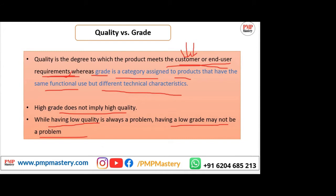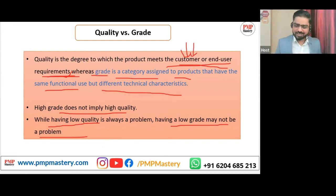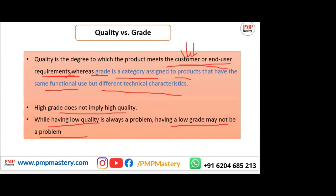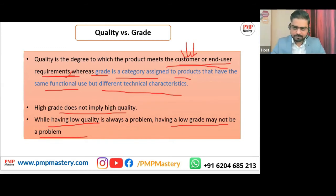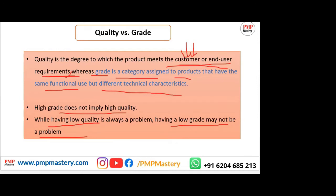Our requirement was for FE 500 steel, but that grade was not available, so we had to go for a higher grade in consultation with the client. In that case, we are going for higher grade and meeting the characteristics — quality-wise it is also good. So in that case going for a higher grade while maintaining quality works out. As stated, having a low grade may not be a problem, and here we maintained quality while going for a higher grade.